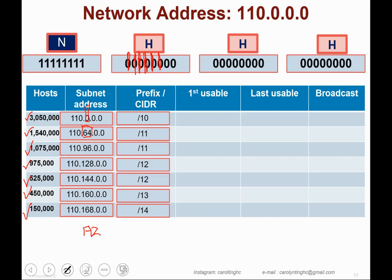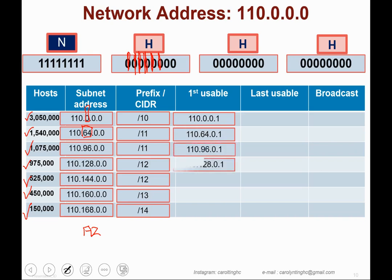Now let's determine the first usable address. According to the theory, the first usable address is the subnet address plus one. So 110.0.0.0 plus one gives 110.0.0.1. The same logic applies to all subsequent subnets — just add one to each subnet address.